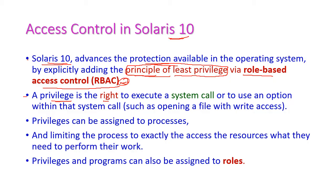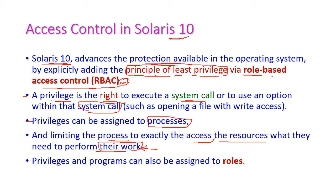A privilege means the right to execute a system call or use an option within the system call. Privilege can be assigned to processes, limiting the process to access only the particular resource it needs to perform its work. Only the currently required resource is allowed, and privilege can also be assigned to roles.